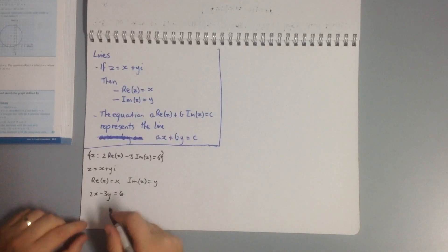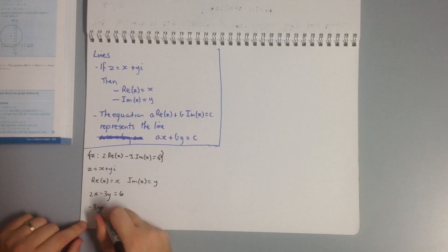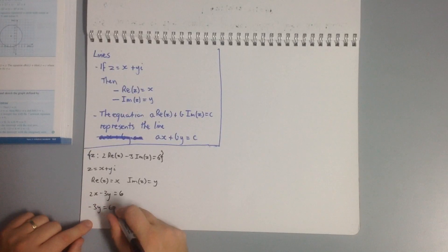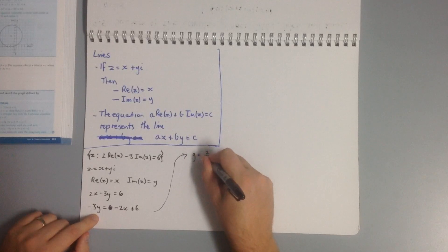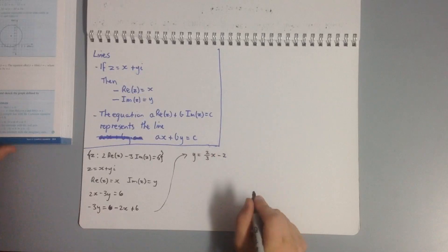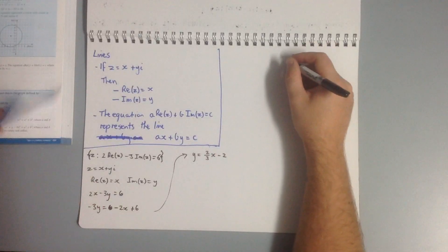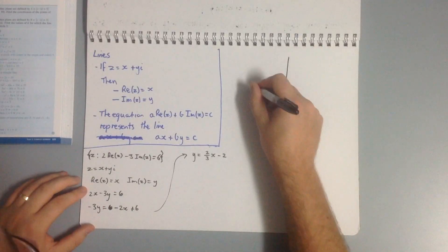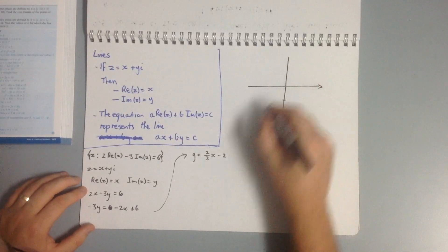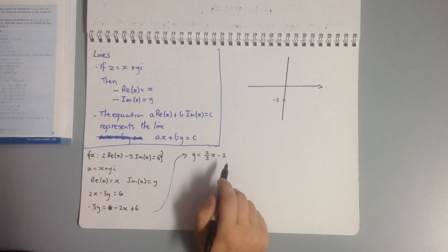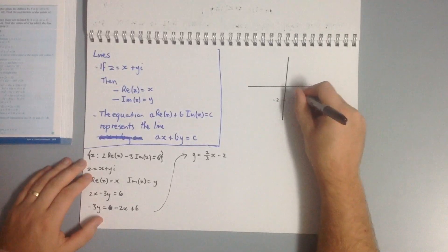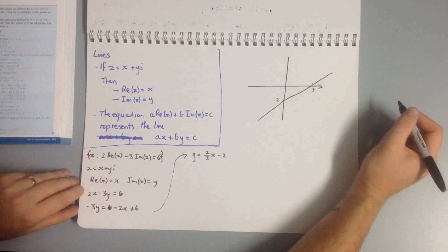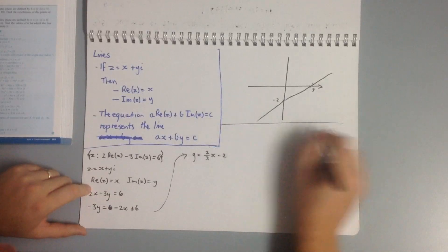Rearranging into the form y equals mx plus c: minus 3y equals minus 2x plus 6, dividing by negative 3 gives y equals two-thirds x minus 2. We can sketch that: y-intercept at negative 2, gradient of two-thirds, so for a run of 3 we go up 2, passing through positive 3 on the x-axis.